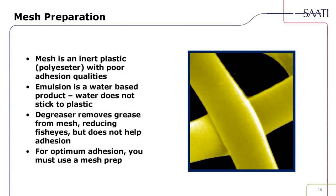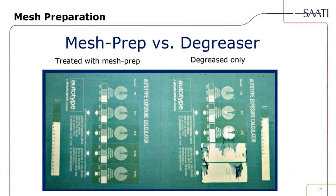Mesh preparation: mesh is an inert plastic — polyester — with poor adhesion qualities. Emulsion is water-based and does not stick to plastic well. Degreaser removes grease from the mesh and reduces fisheyes but does not help adhesion. For optimum adhesion results, you must use a mesh prep. The illustration shows Saudia mesh prep on the left versus a standard degreaser only. With mesh prep, the emulsion stayed adhered even when underexposed; without it, the emulsion did not stick. The 21-step strip clearly confirms underexposure.